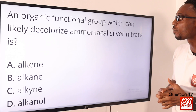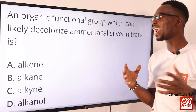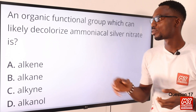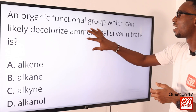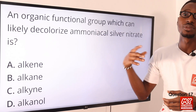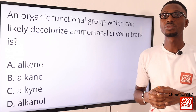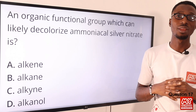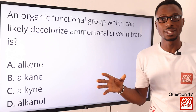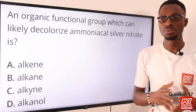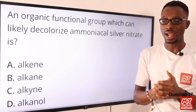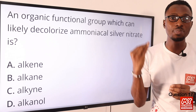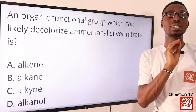Question seventeen: an organic functional group which can likely decolorize ammoniacal silver nitrate solution is what? This is also referred to as Tollens' reagent. The functional group we are looking at is aldehydes — specifically the terminal aldehyde. When they react with this reagent, you get a silver mirror precipitate. Take note of the terminal aldehyde. The correct option is option C for aldehydes.